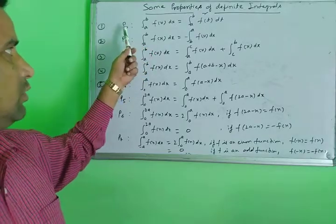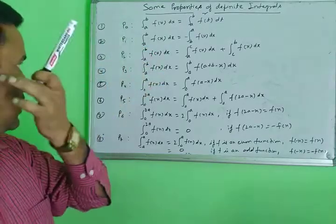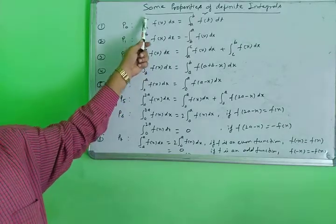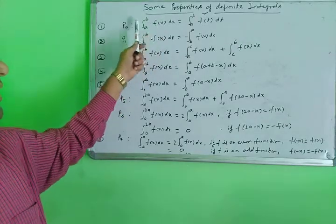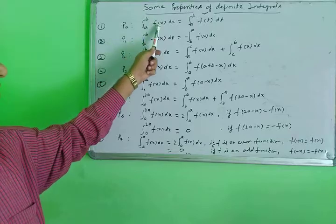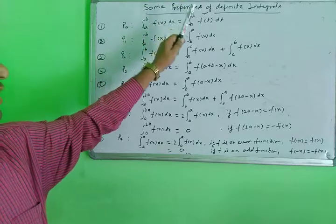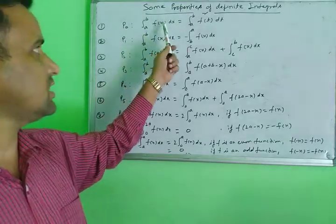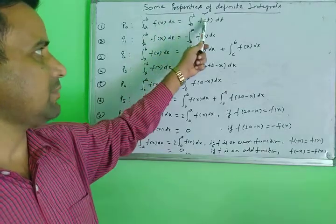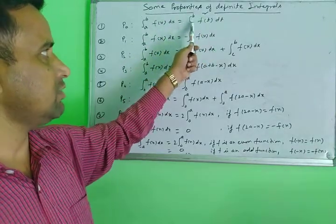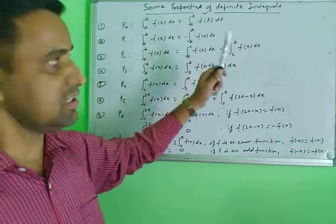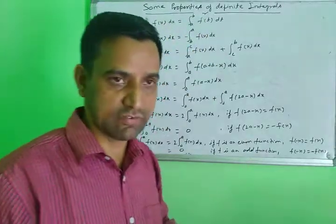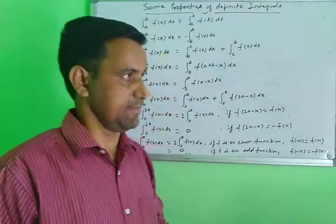The first property is called P0. For limits a to b, the integral of f(x) dx — you can change the variable. You substitute f(x) dx with f(t) dt. The limit will remain the same, but f(x) dx can be changed to any other variable like f(t) dt.